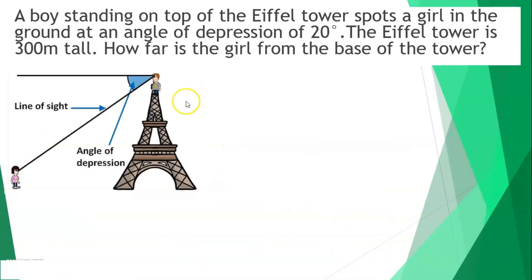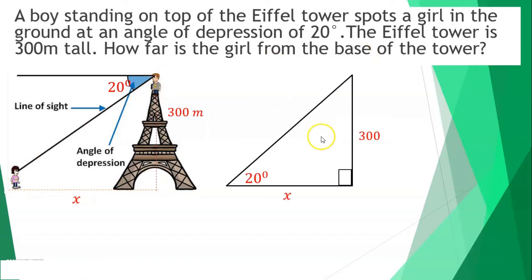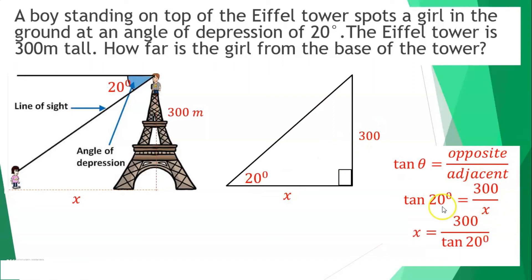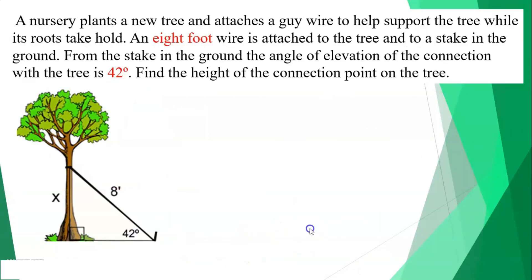A boy on top of the 300-meter Eiffel Tower spots a girl on the ground at an angle of depression of 20 degrees. How far is the girl from the base of the tower? Using tangent: tan(20°) = 300/x. Cross-multiplying gives x ≈ 824.24 meters. The girl is 824.24 meters from the base.